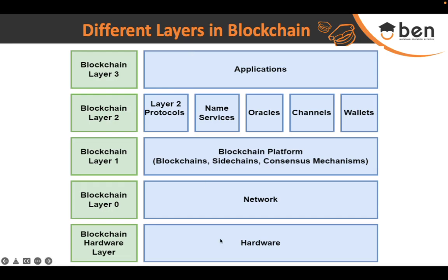In blockchain technology, at the bottommost layer we have the hardware layer, which deals with all the hardware components. On top of it we have Layer 0, which is known as the network layer. It is mostly responsible for connecting the nodes and interacting with them. All resources, infrastructure, and communication between the nodes are taken care of in this layer.